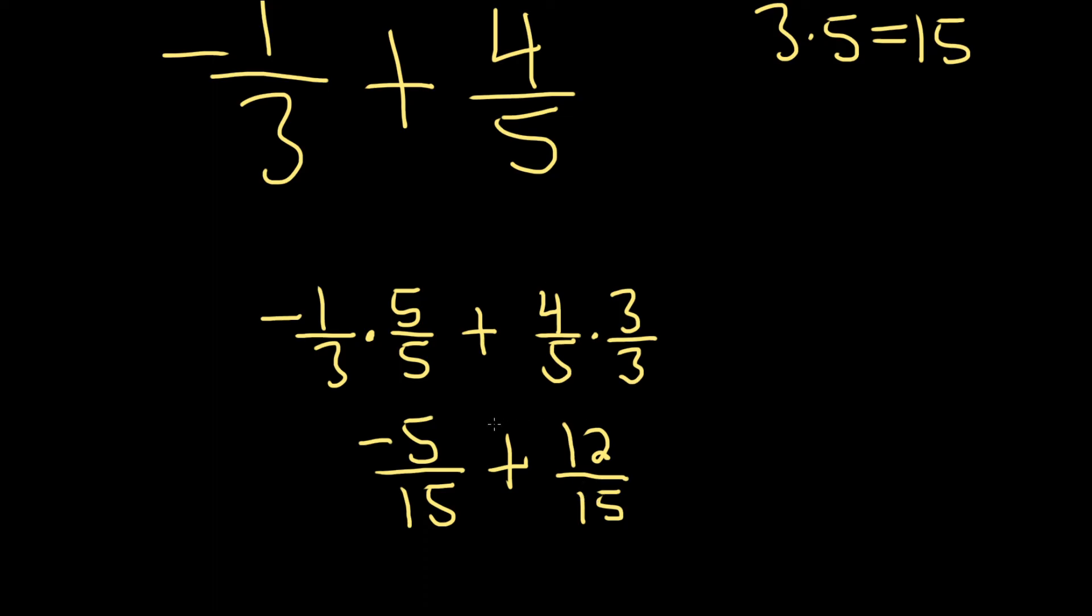Good stuff. And now you can just add these, because the bottoms are the same. The denominators are the same. So negative 5 plus 12 is equal to 7. So we have 7 over 15.